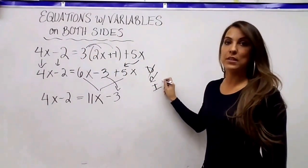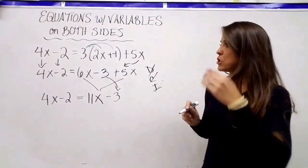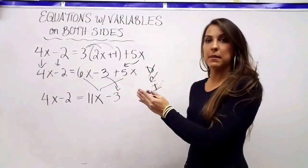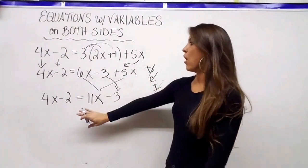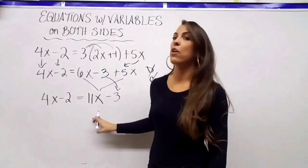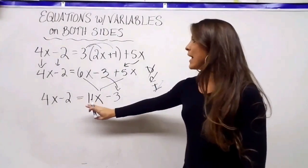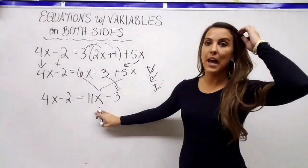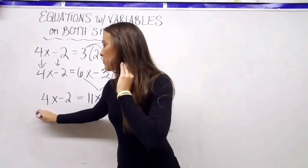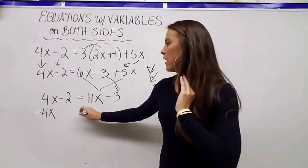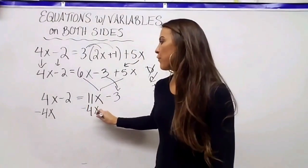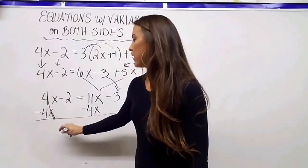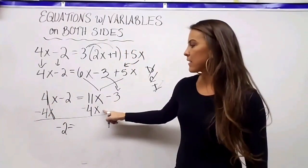The I stands for inverse operations — that's how I move things from one side to the other. I have 4x on my left and 11x on the right and I want x on one side, so I subtract 4x from both sides. 4x minus 4x is 0, leaving negative 2. 11x minus 4x is 7x, and I bring down the minus 3.